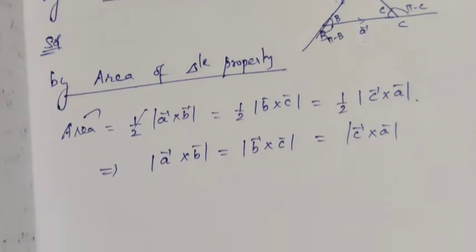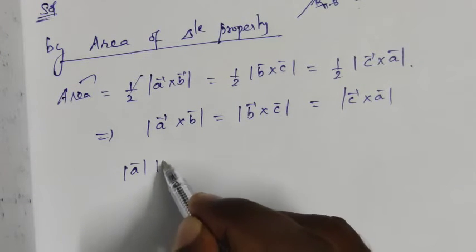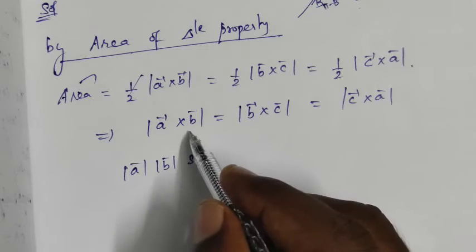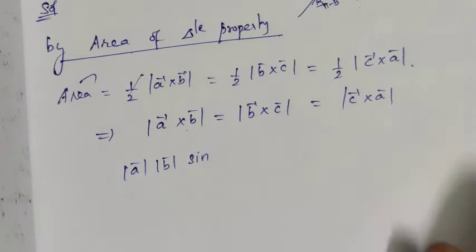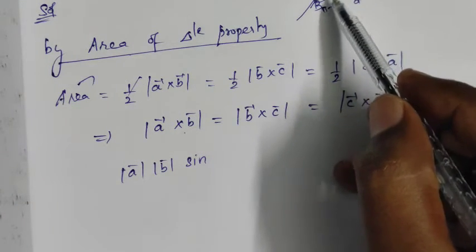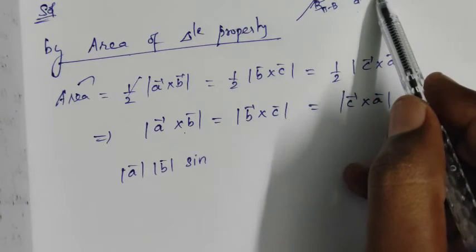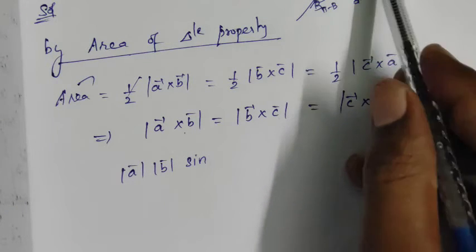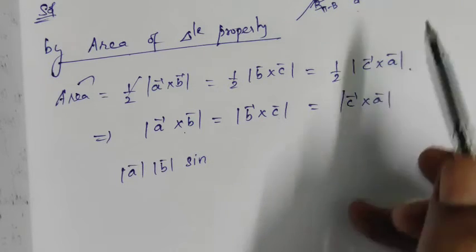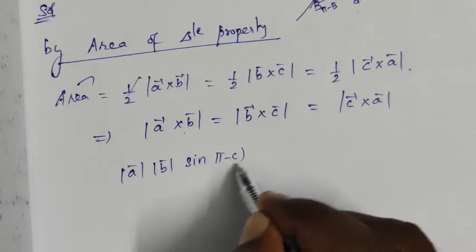This is a direct formula. For a cross product, |P||Q| sin θ. So expanding: magnitude of A times magnitude of B times sin θ. The angle between vectors A and B is π minus C, so this becomes magnitude A times magnitude B times sin(π minus C).